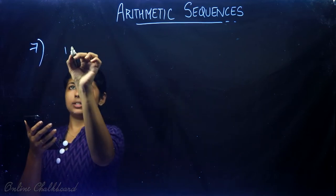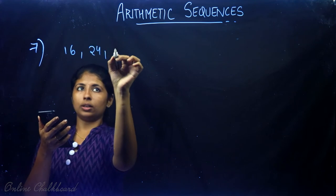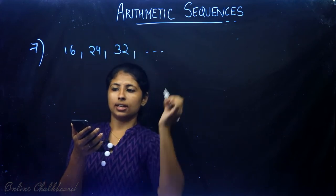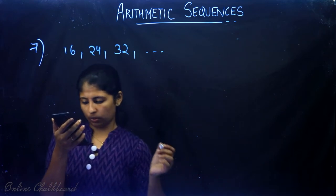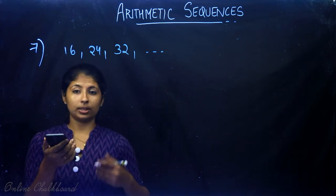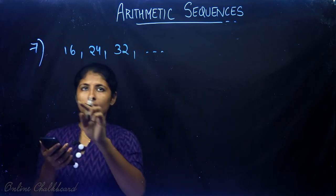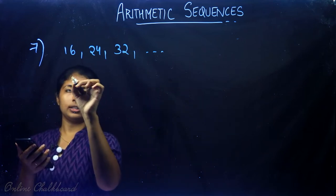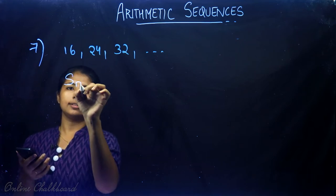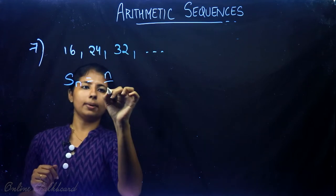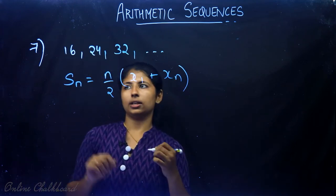The arithmetic sequence is 16, 24, 32, and we call its sum SN. We need to prove that SN plus 9 is a perfect square. We use the formula: Sn equals n divided by 2 times (first term plus last term).